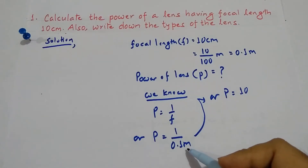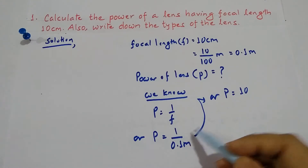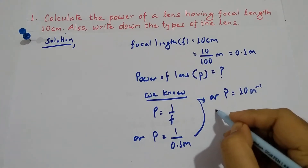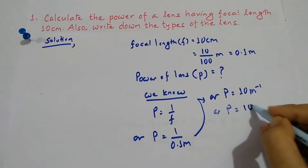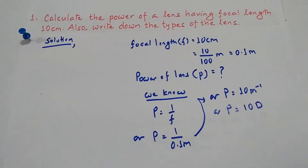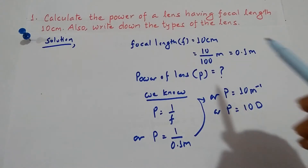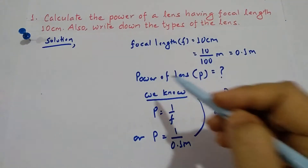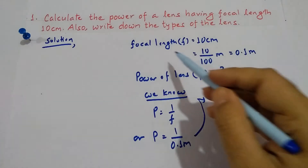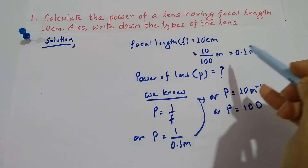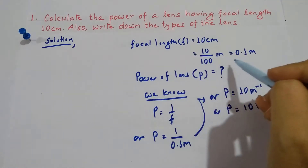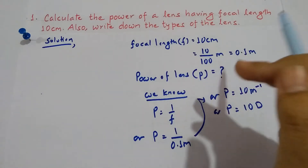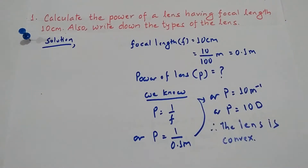You must be very careful about this. When meter goes up, it becomes m power minus 1, which is D — that is diopter. So P equals 10 diopter. Now let's find out the type of lens. The type of lens is identified by the focal length. See here your focal length is positive, that's why your lens is convex. If there was a negative sign it would be concave, but here you have a positive sign, so the lens is convex.